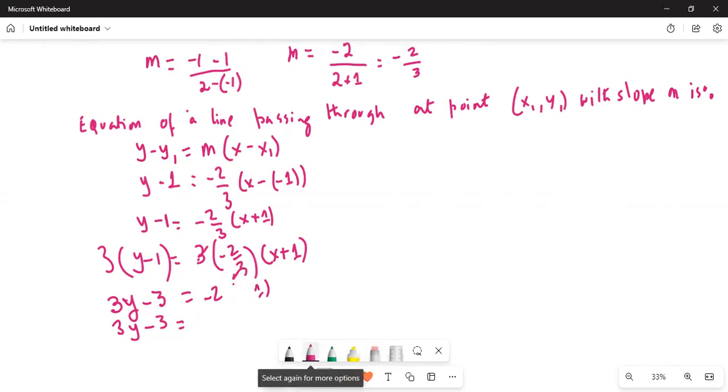So it's -2 times (x plus 1). Now I'll distribute the -2 to the terms inside the parenthesis. So it's -2x, and -2 times 1 is -2.